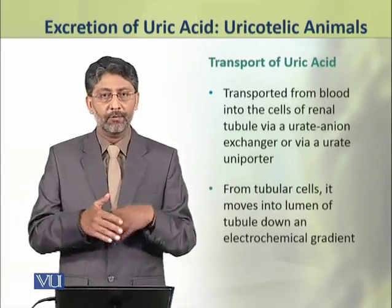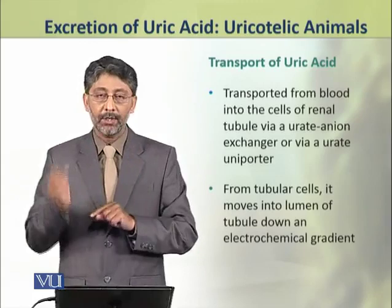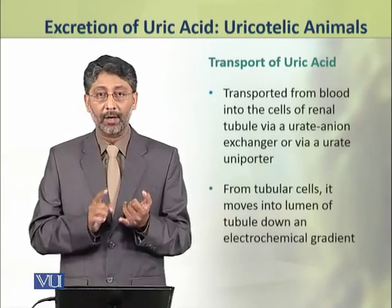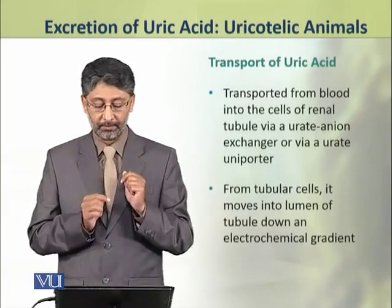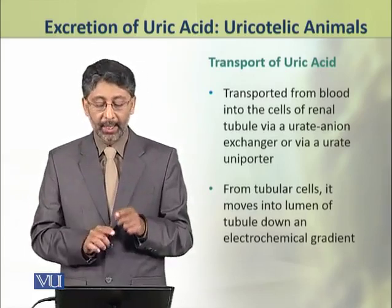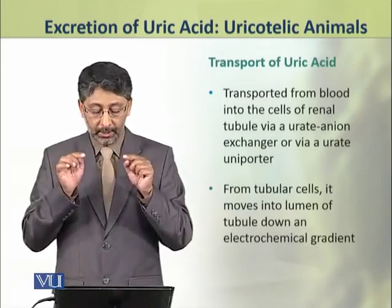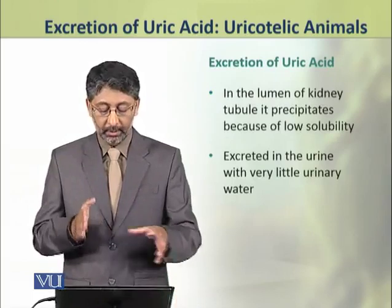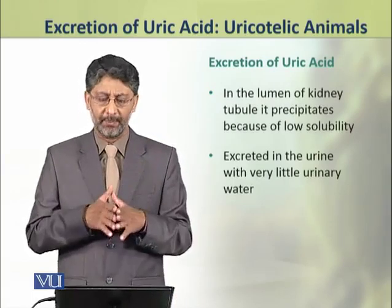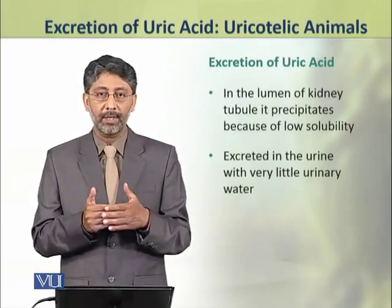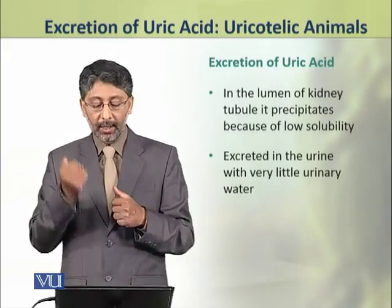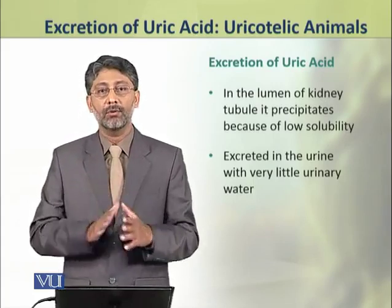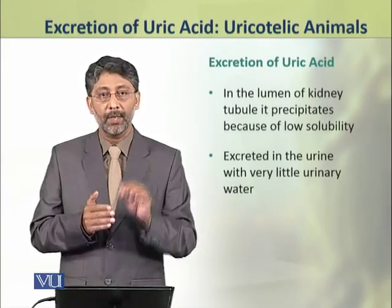Uric acid, once formed, is transported from the blood into the cells of the renal tubule through a urate anion exchanger or through a urate uniporter. When uric acid reaches the tubular cells, it moves into the lumen of the tubule down an electrochemical gradient. In the lumen of the kidney tubule, it precipitates because of its low solubility, and is then excreted out with urine without any major water loss.